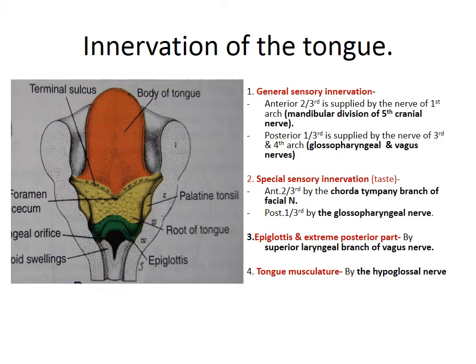For special sensory innervation (taste sensation), the anterior two-thirds of the tongue is supplied by the chorda tympani branch of the facial nerve, the posterior one-third by the glossopharyngeal nerve, and the epiglottis and extreme posterior part by the superior laryngeal branch of the vagus nerve. The muscles of the tongue are supplied by the hypoglossal nerve.